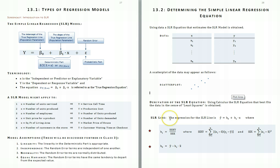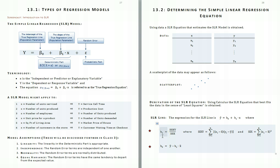The Simple Linear Regression line is: Y-hat equals B0 plus B1 times X, where B1, the slope of the Simple Linear Regression line, is obtained by taking SSXY divided by SSX. SSXY is the sum of the X residuals times the Y residuals, and SSX is the sum of the X residuals squared.